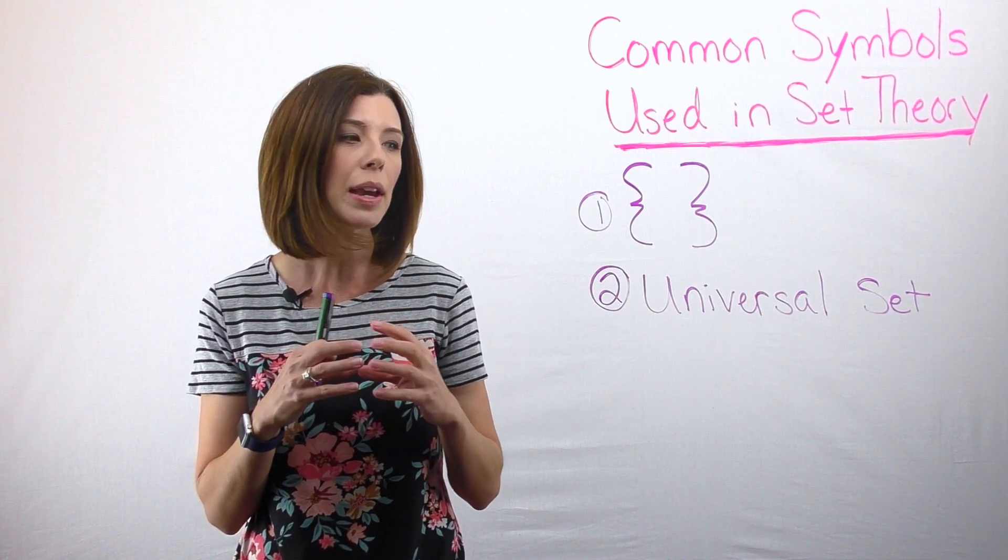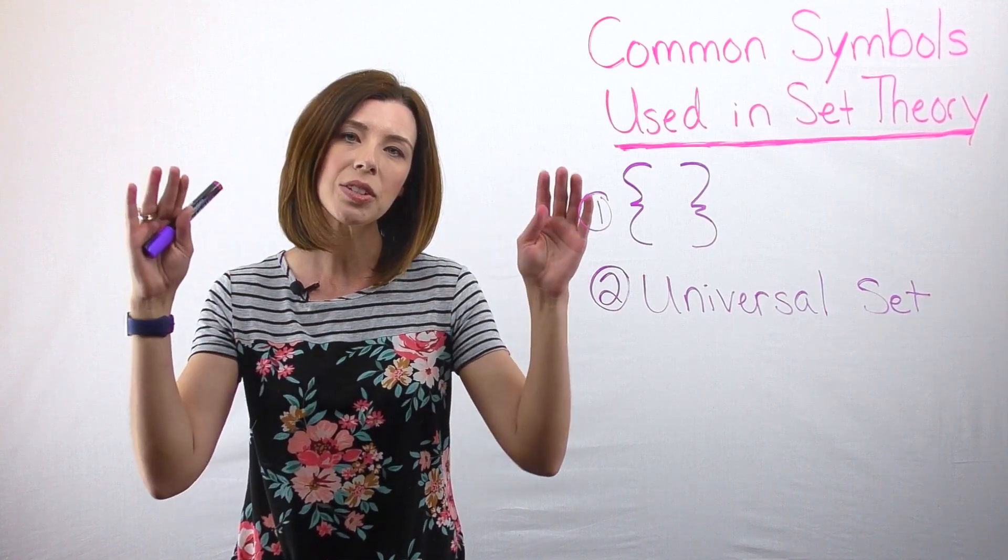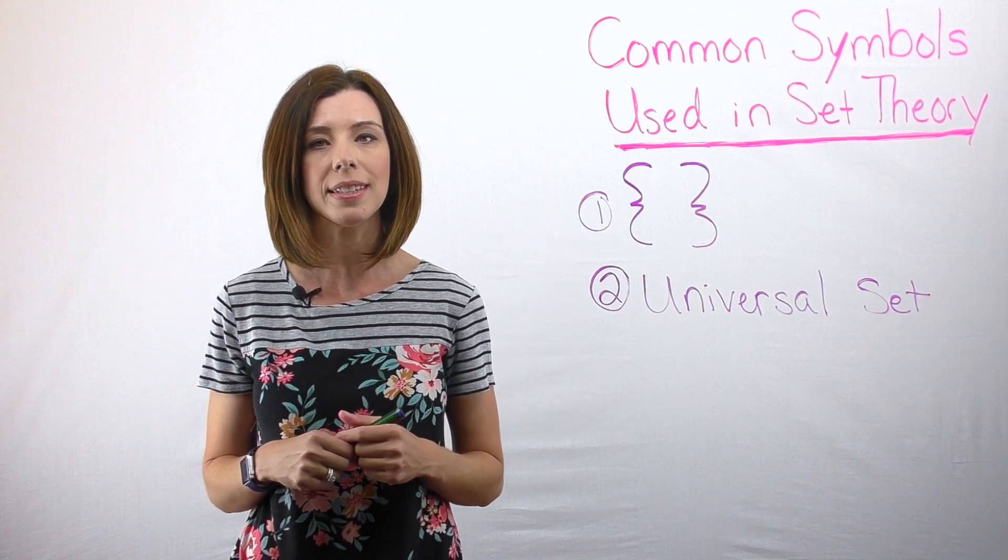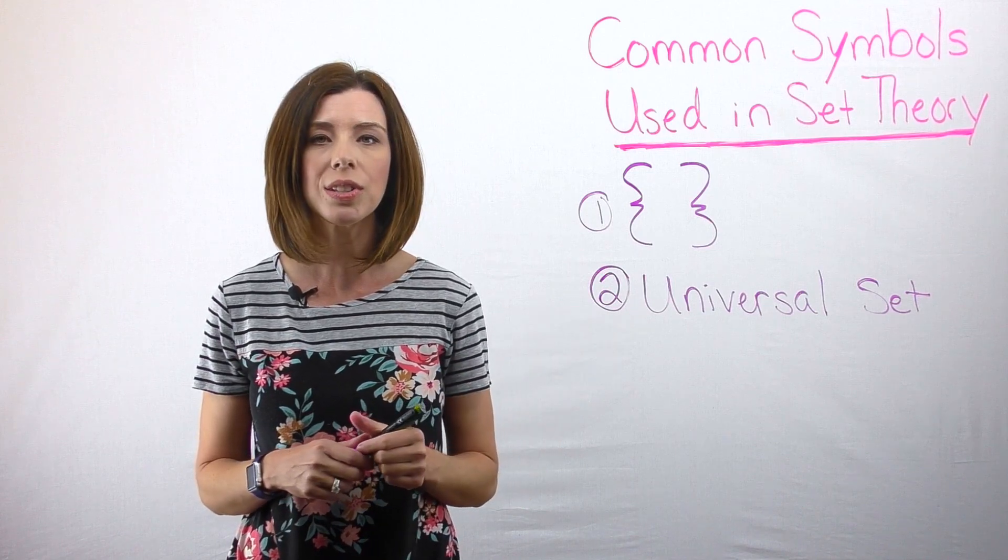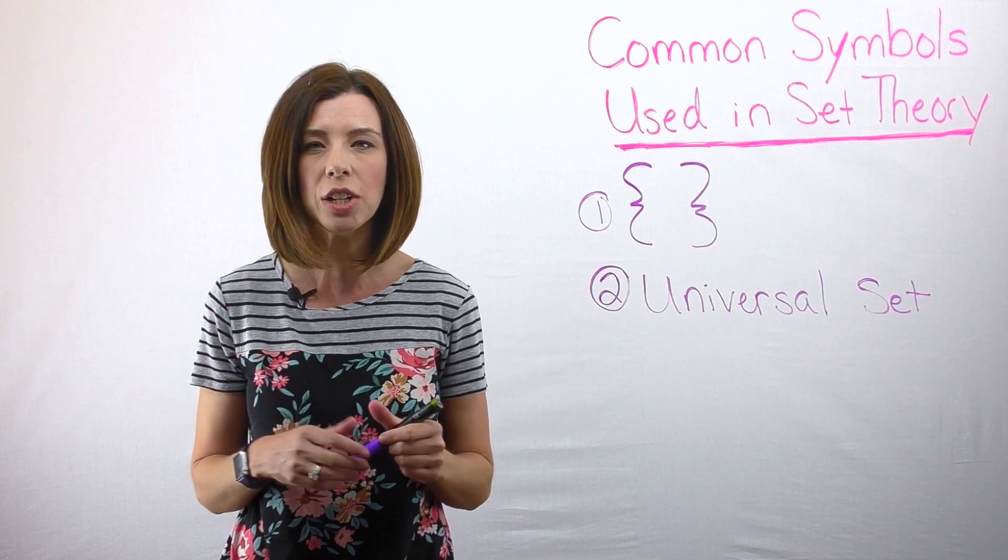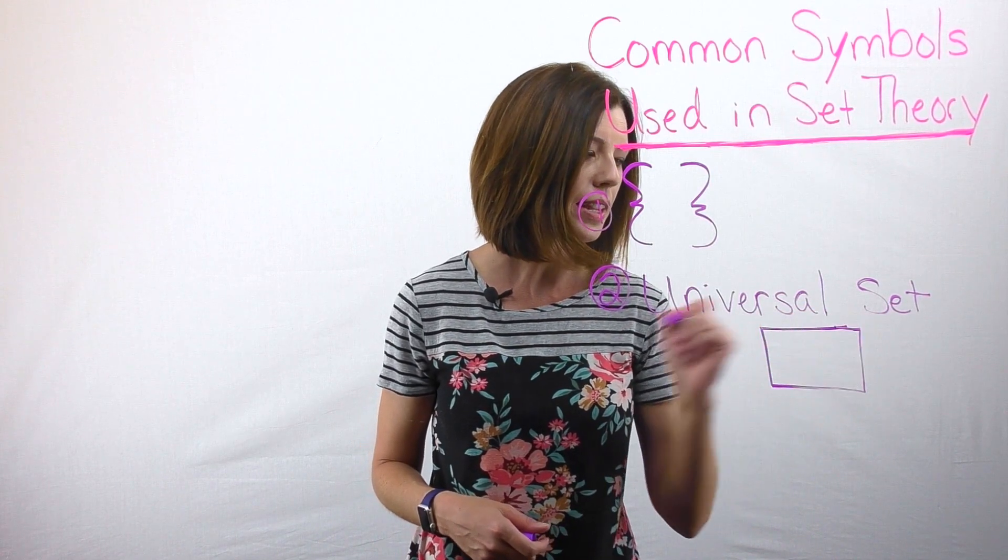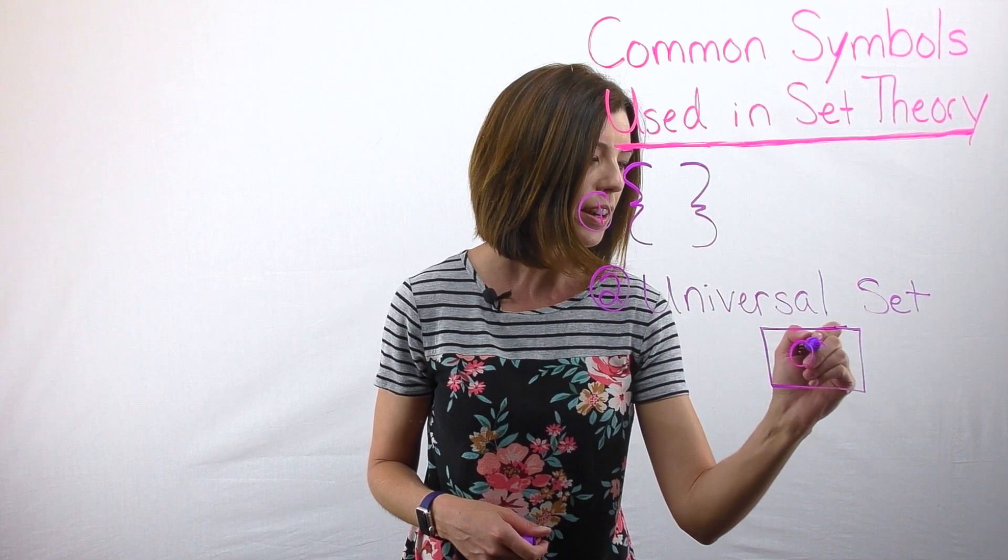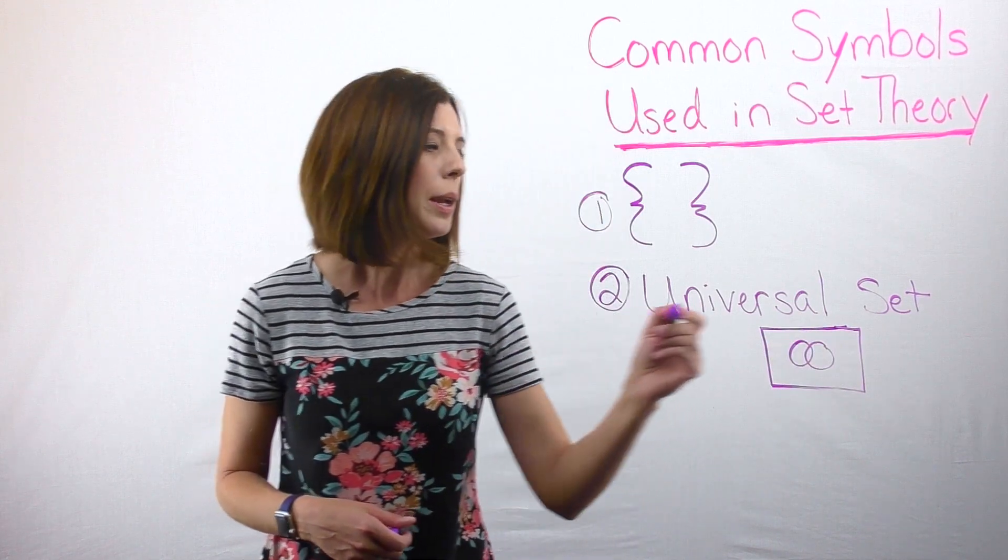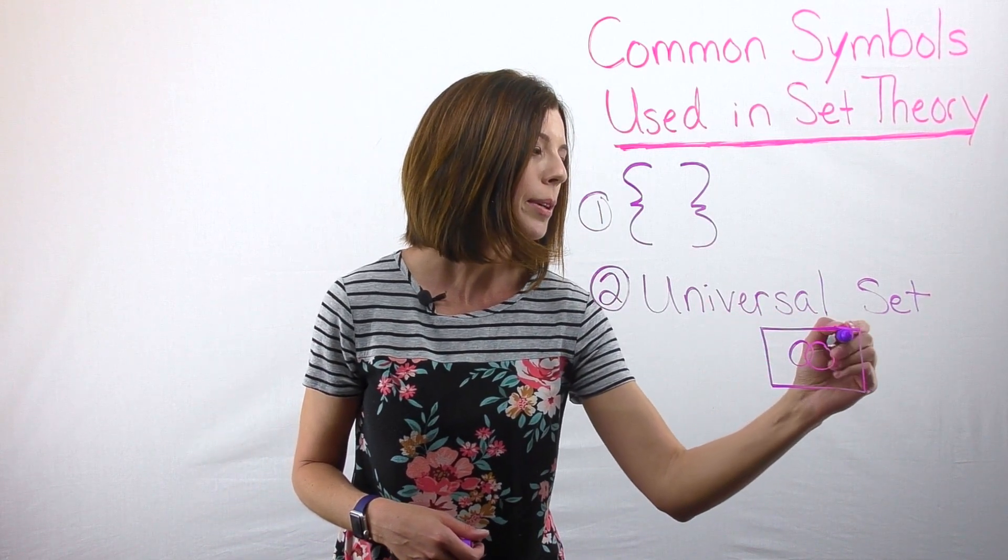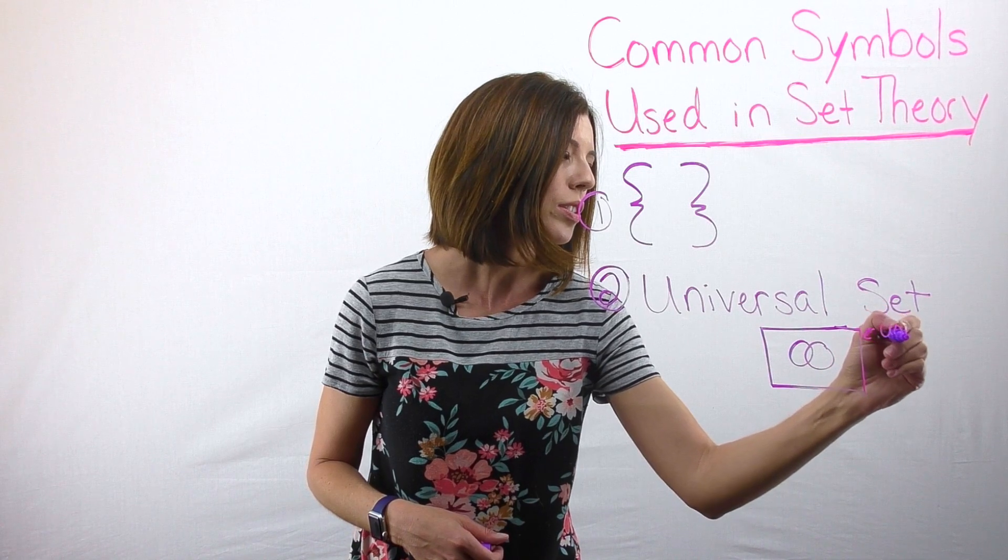I can have smaller sets underneath of it, but my universal set encompasses all of the elements in the set. When we use universal set, we have a notation for that in that we draw it as a big rectangle. So I might have my Venn diagrams inside of it, but this area represents the universal set.